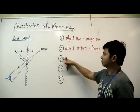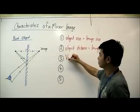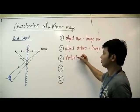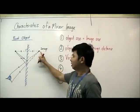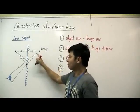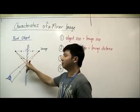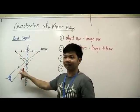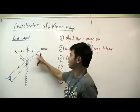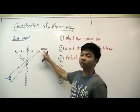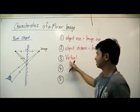The third characteristic: the image is virtual. What do I mean by virtual? It's because the image is actually formed by the eye, because the eye is tracing back the path of the light rays and trying to find an image that is non-existent. That's why it's a virtual image.